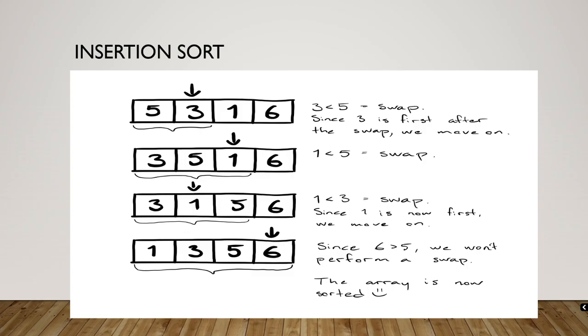Here a sublist is maintained which is always sorted. For example, the lower part of an array is maintained to be sorted. An element which is to be inserted in this sorted sublist has to find its appropriate place, that is the index. It should find its appropriate place and then it has to be inserted there. Hence the name insertion sort. The array is searched sequentially and unsorted items are moved and inserted into the sorted sublist in the same array.